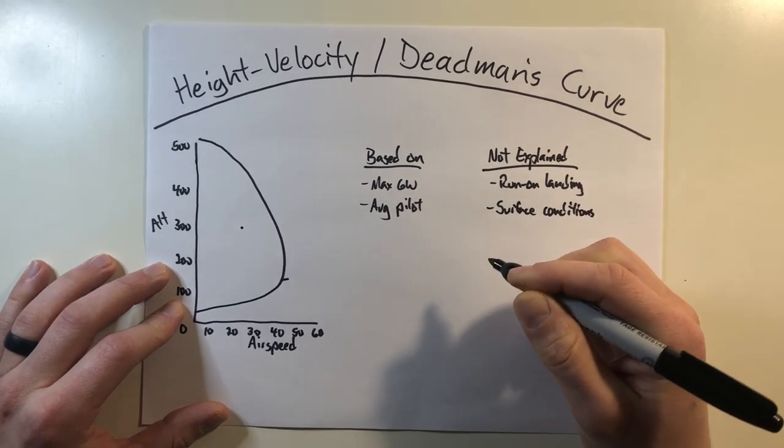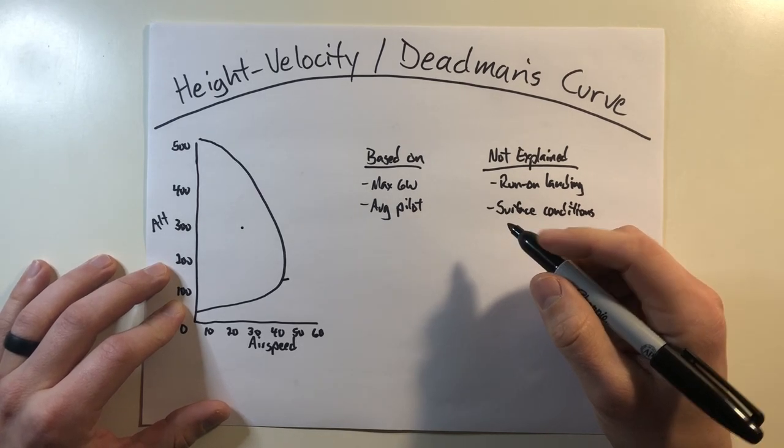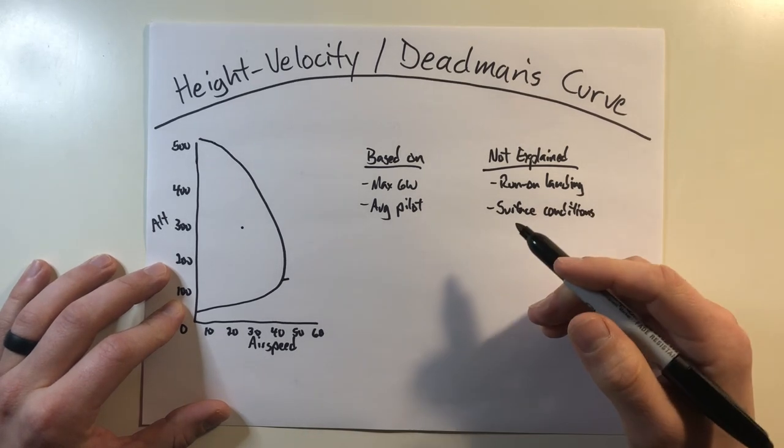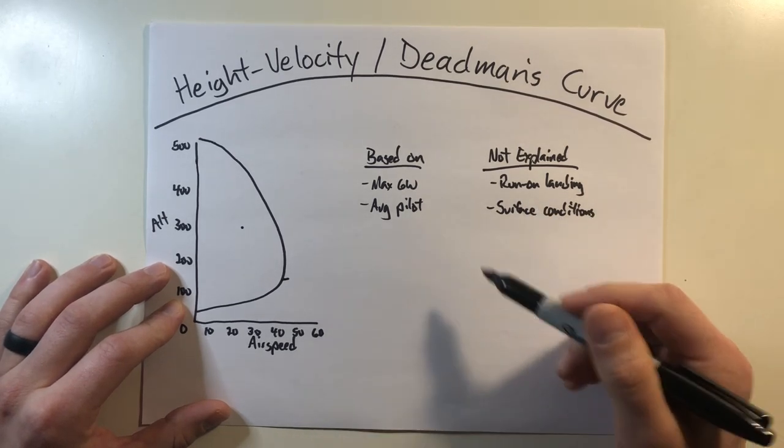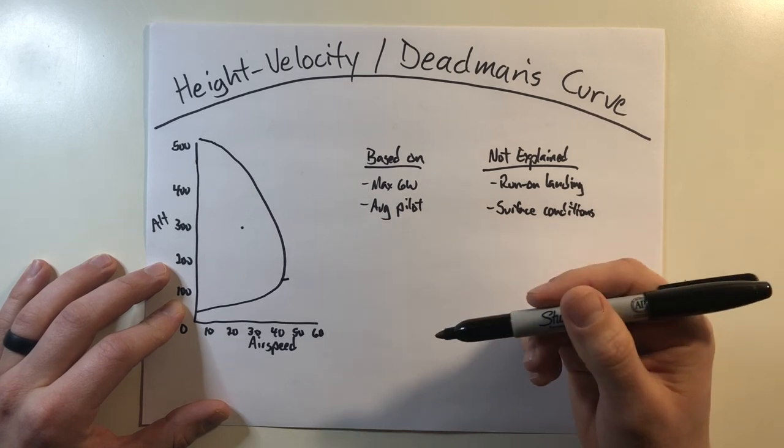Now, we're not always operating above a nice flat runway, so the guarantee that your auto is survivable is not necessarily there if you're operating in other areas. Secondly, just because you're outside the curve, it doesn't necessarily mean you're safe in the event of an engine failure.